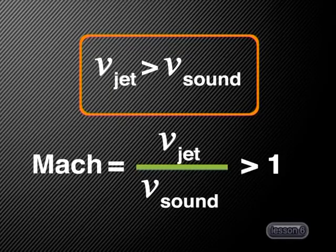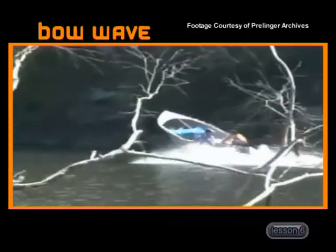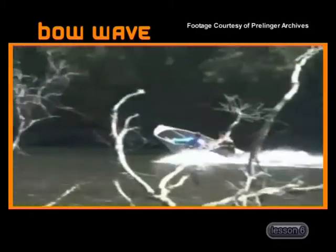When a jet flies faster than the speed of sound, its speed is described as being supersonic. Because the jet's velocity is greater than the speed of sound, its Mach number would then be greater than one. We can actually see a shock wave when we look at a speed boat traveling through water. When the boat is moving faster than the water waves that it is causing, the superposition of the waves behind it form a shock wave. When this is formed in water, it is usually called a bow wave.